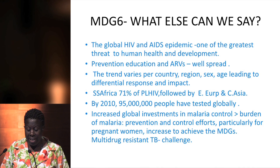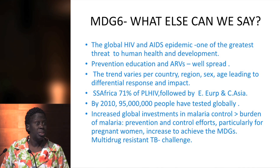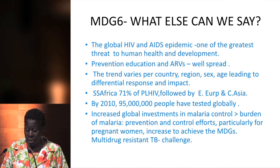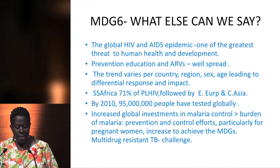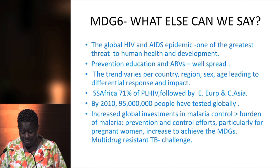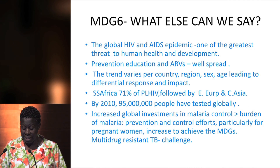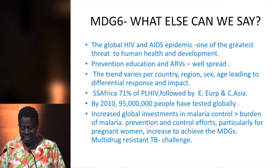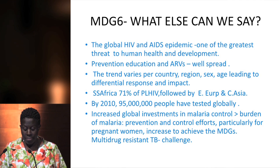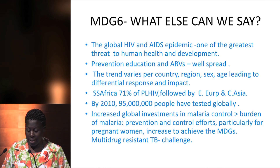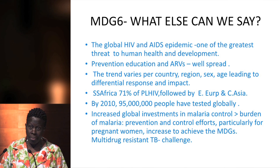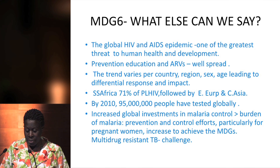Progress varies by country, region, sex, and age, reflecting differential responses according to the economic well-being of countries. Sub-Saharan Africa has 71% of people living with HIV, followed by Eastern Europe and Central Asia. By 2010, 95 million people had been tested globally, and there have been increased investments in malaria with positive trends visible.